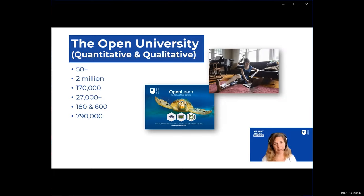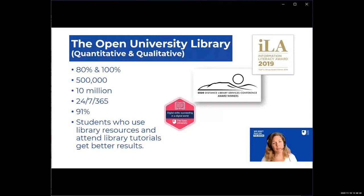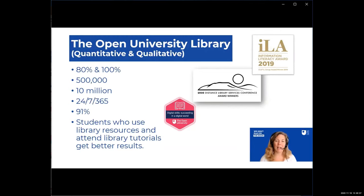Students can choose from 180 qualifications made up of 600 modules. Open Learn is our free platform of learning materials available to anybody on a Creative Commons license. When the first UK lockdown happened, we quickly moved courses onto that platform — launching courses on how to teach online, coping with mental health, and materials aimed at school children. In that period, close to 800,000 courses were completed. The library is very digital: 80% of our books are electronic and 100% of our journals. Half a million unique visitors come to our website every year, resulting in normally about 10 million page views per annum.